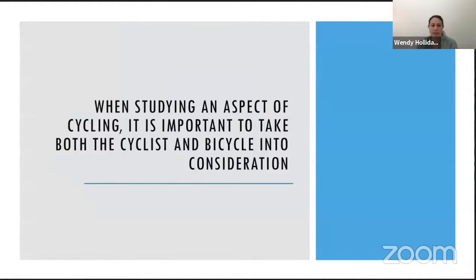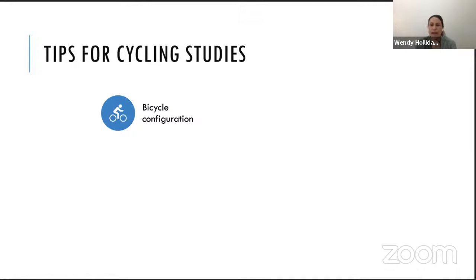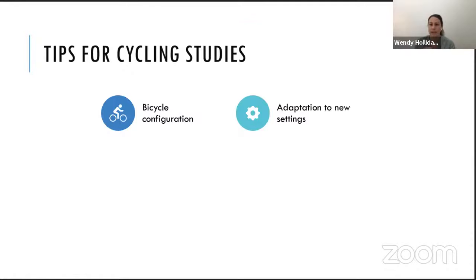When studying cycling, it's important to consider both cyclist and bicycle, because changing one part will influence other parts. Some tips for cycling studies: if you change any aspect of the configuration, give the rider adequate time to adapt to the new setup — some studies that didn't allow adequate adaptation time saw participants sliding forward on the saddle to find a more comfortable position, which negatively affected results.